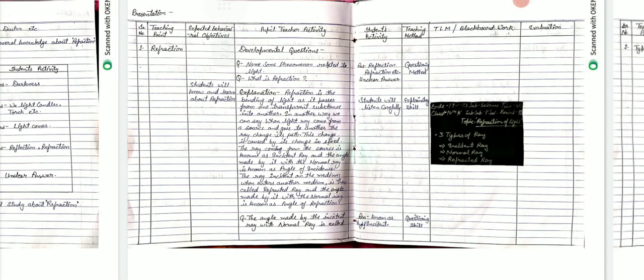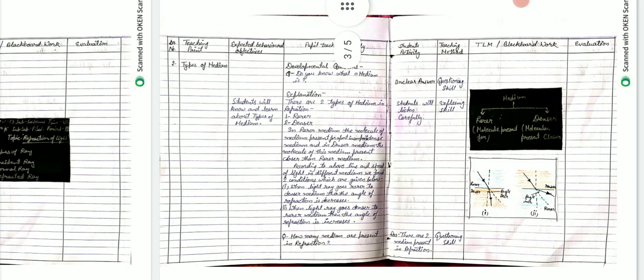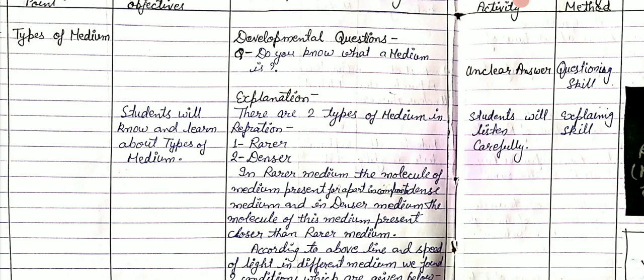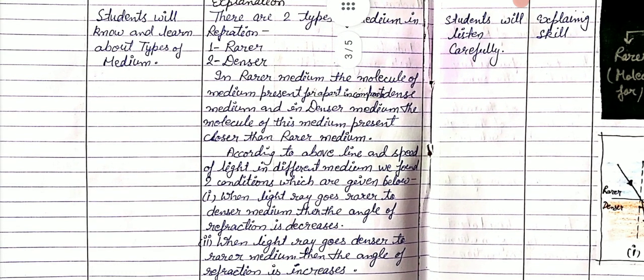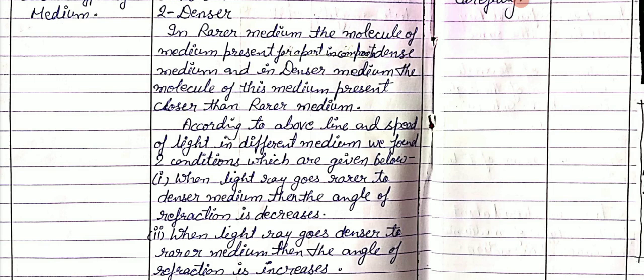After that we note the second teaching point: types of medium. First developmental question: do you know what a medium is? We found an unclear answer, then we start our explanation. There are two types of mediums in refraction: first is rarer, second is denser.